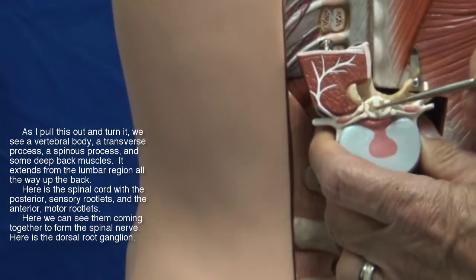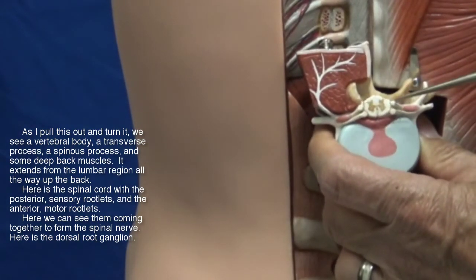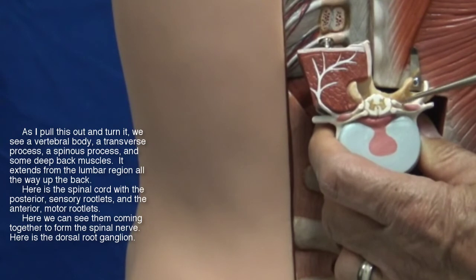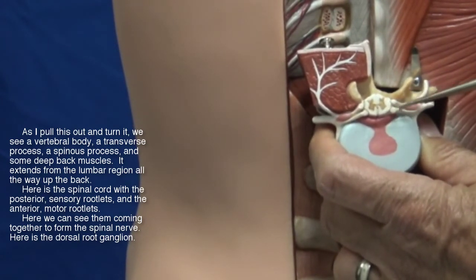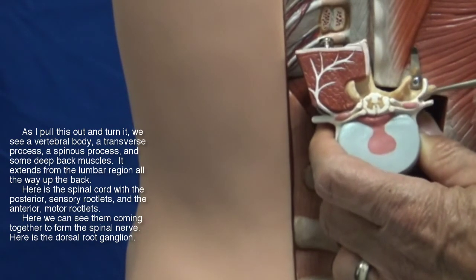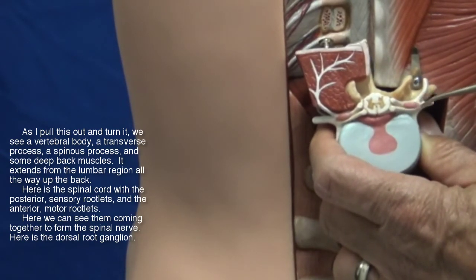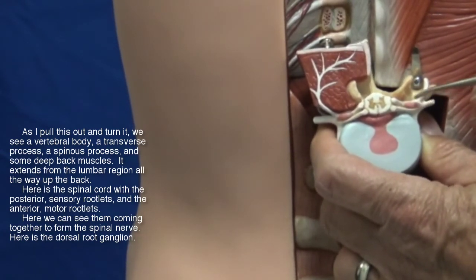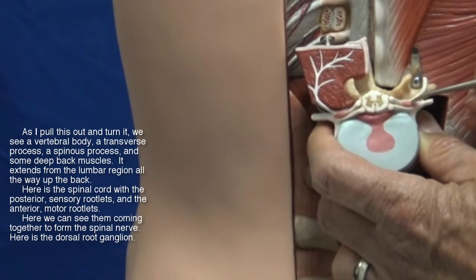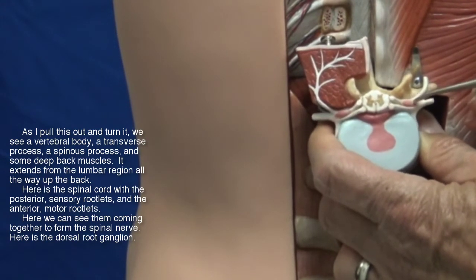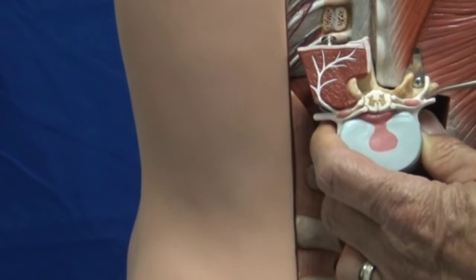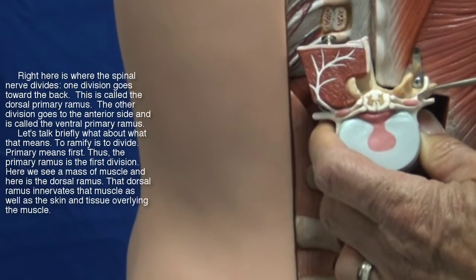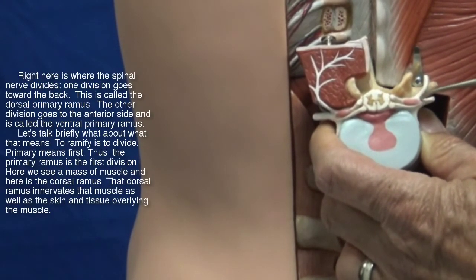Here is the spinal cord with the posterior sensory rootlets and the anterior motor rootlets. Here we see them coming together to form the spinal nerve. Here's the dorsal root ganglion.